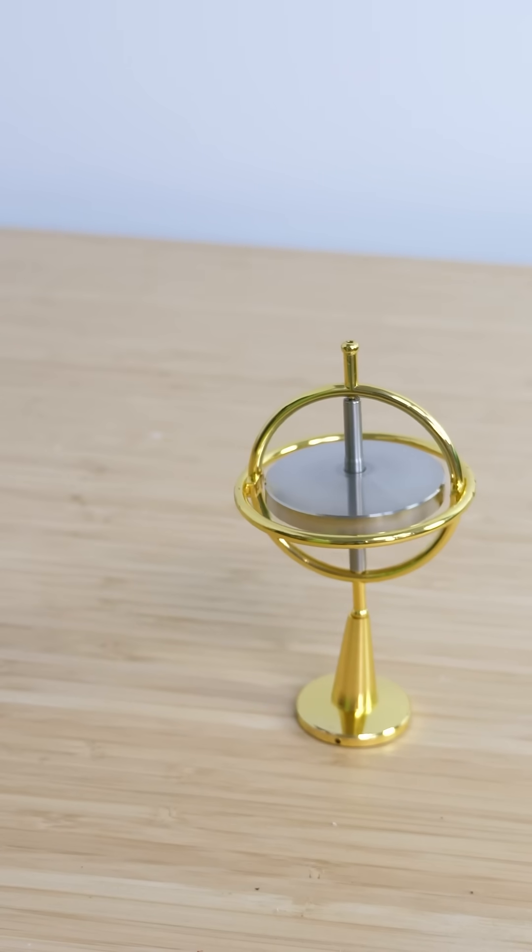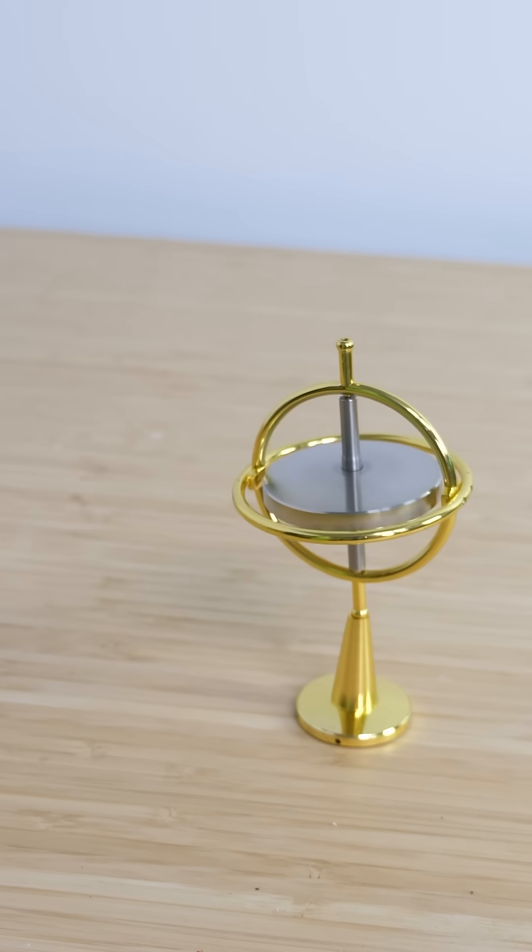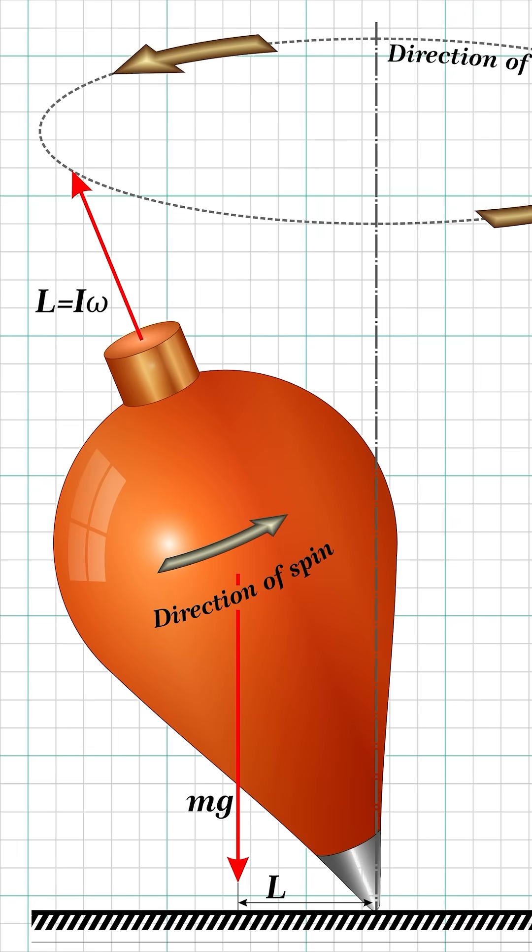However, even spinning discs eventually fall, but they do so differently than non-spinning discs. When they fall, they don't just tip over, they move in a circle. This movement is called precession.